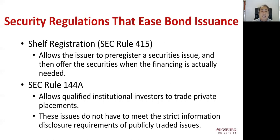When a bond is issued, it must be registered with the SEC, but you don't have to register bond by bond. This is called shelf registration, which allows the issuer to pre-register securities and then offer them when financing is actually needed. The company can pre-register bonds and then issue them when needed, though there are preconditions — the issuer must be a mature company. This makes bond issuance easier.